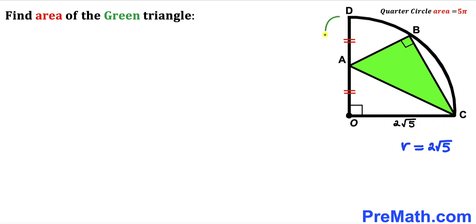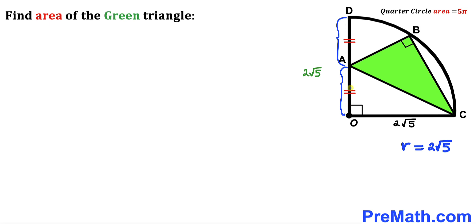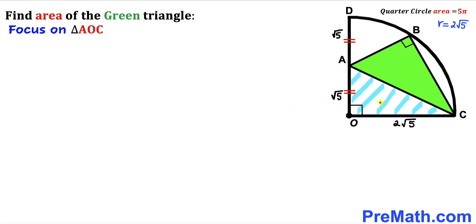Therefore radius DO is also 2√5. Since segments AD and AO are equal, segment AD has length 2√5 and likewise the other segment is 2√5 as well. Now let's focus on right triangle AOC.